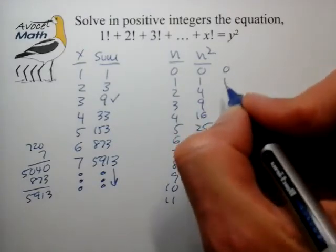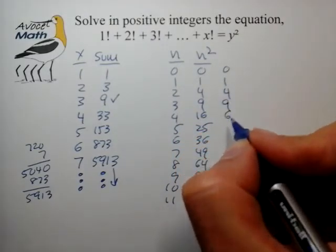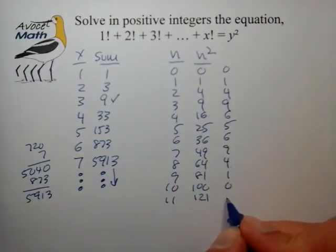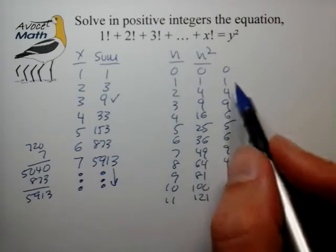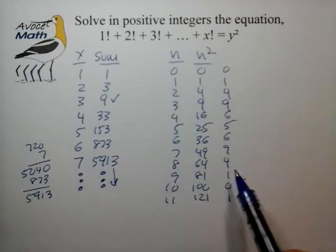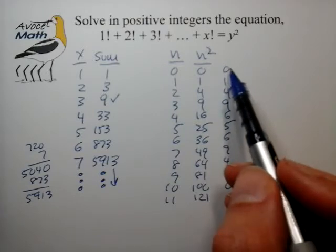Okay, so looking at the units digit we definitely notice kind of a striking pattern here. 5, 6, 9, 4, 1, 0, 1. It looks like it repeats at this point and we definitely see that the number of available digits for the square in the units digit is quite reduced from 0 to 9.